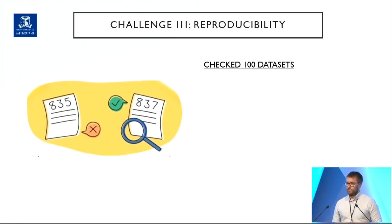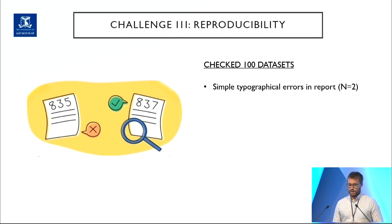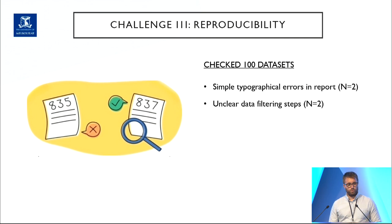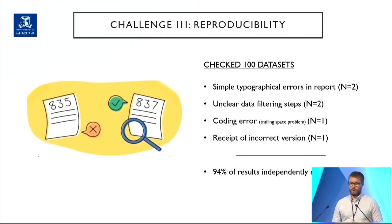For the third challenge, we performed a series of data integrity checks. The one I'll talk about today is simple computational reproducibility — we looked at what percentage the studies said articles had shared data or code, and tried to reproduce that number from the datasets we had. Of 100 datasets checked, two had a mismatch between the report and the data due to typographical errors, two had unclear data filtering steps which meant we couldn't reproduce findings, we discovered one coding error due to a trailing space issue, and we couldn't reproduce one finding because we received an incorrect version of the data. This worked out to a 94% reproducibility rate, which was great.